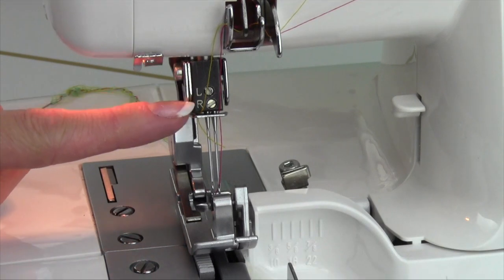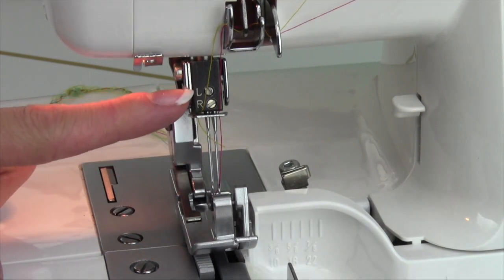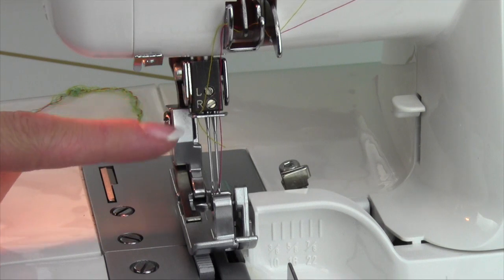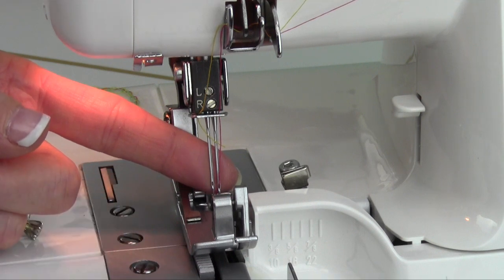You're going to notice you have an L and an R. If you're taking out your left needle, you're going to loosen the screw next to the L at the top. Notice that your needles are two different heights. The left needle is always higher than the right needle.